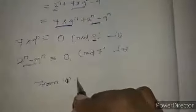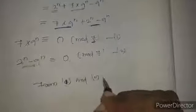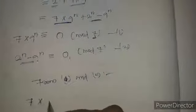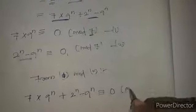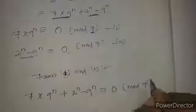From equations 1 and 2, the overall expression 7·9^n plus 2^n minus 9^n is congruent to 0 mod 7.